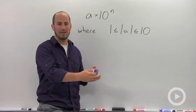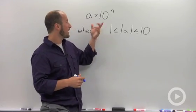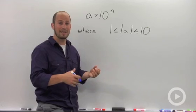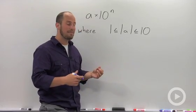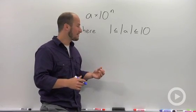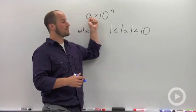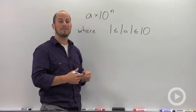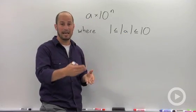And instead of writing out all those zeros, what comes in handy is writing things as a times 10 to the n. So you're really writing them as powers of 10. And basically the only rule for scientific notation is that a, this term we're multiplying by, the absolute value has to be between 1 and 10.